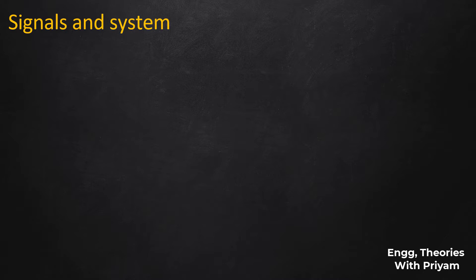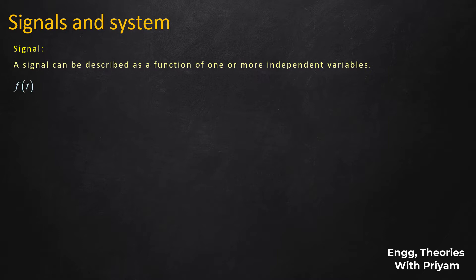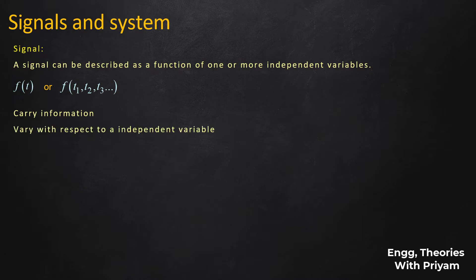In today's lecture we will see a basic introduction about signals. A signal can be defined as a function of one or more than one independent variables, such as f(t) as a function of one variable t, or f(t1, t2, t3) as a function of more than one variable. The signal itself is a dependent variable varying with respect to the independent variable t. A signal must carry information, vary with respect to an independent variable, and must be a physical quantity.